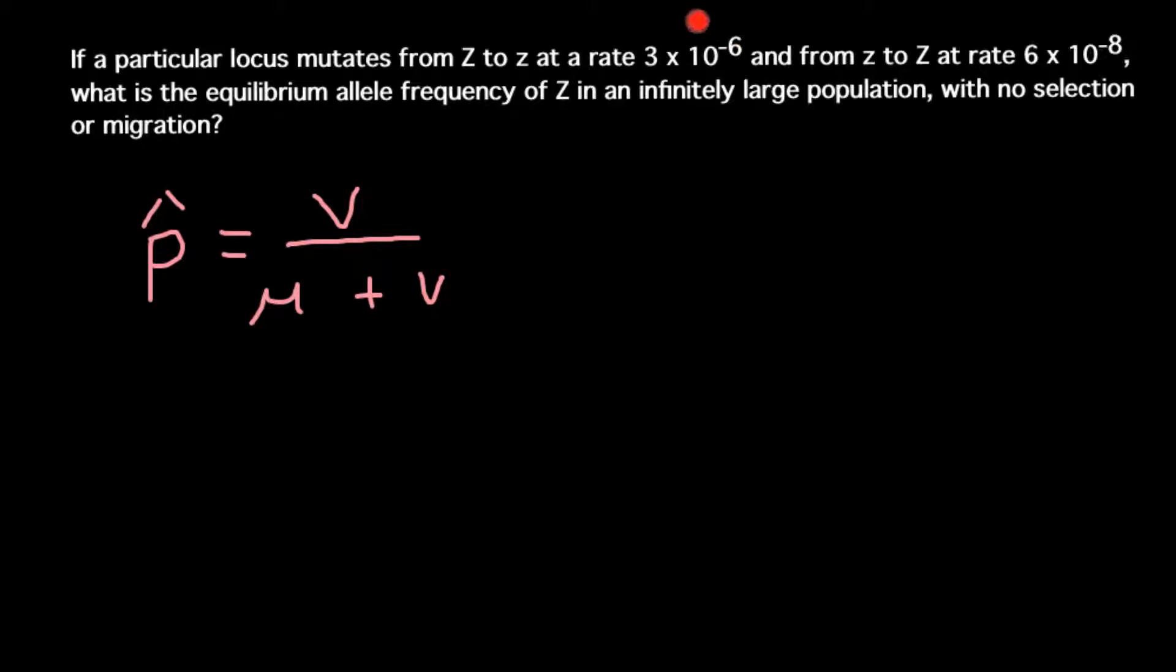So let's compare these two numbers. As you see, this number is smaller, so this goes here on top. Let's rewrite this formula using real numbers: p̂ equals 6 × 10^-8 divided by μ, which is 3 × 10^-6, plus ν, which is 6 × 10^-8.